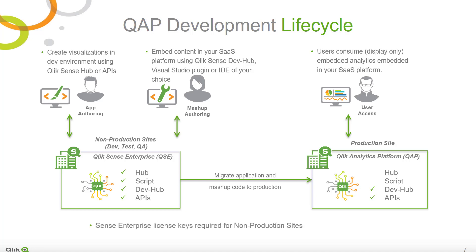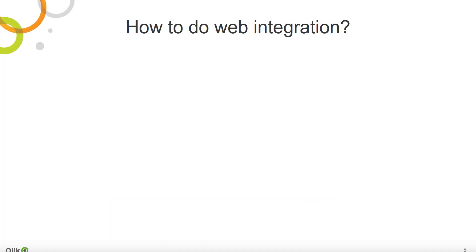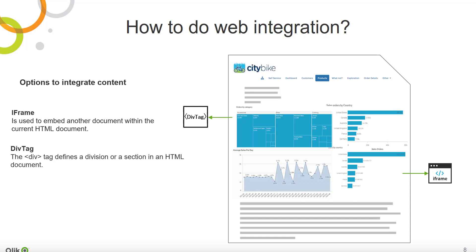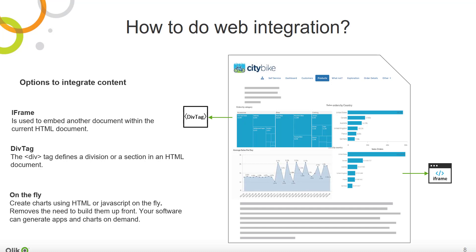Now that you understand the range of options you have for integration, let's talk about how to do this with a few approaches. You can integrate the Qlik Sense hub using an iframe. You can integrate a sheet or chart using an iframe or div. Finally, you always have the option to generate apps and charts on the fly using code in your SaaS platform.